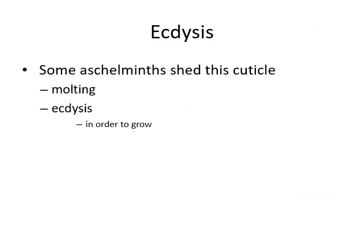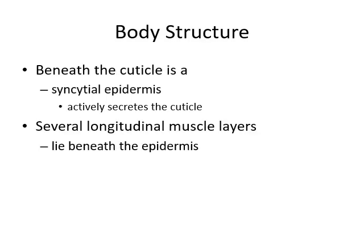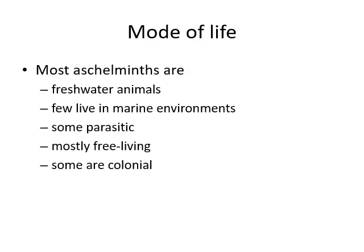Ecdysis — that is, shedding of the cuticle. Some Aschelminthes shed their cuticle by the molting or ecdysis process when they grow. Body structure beneath the cuticle is a syncytial epidermis that actively secretes the cuticle; several longitudinal muscle layers lie beneath the epidermis. Most Aschelminthes are freshwater animals, and few live in marine environments; some are parasitic, some are mostly free-living, and some are colonial.